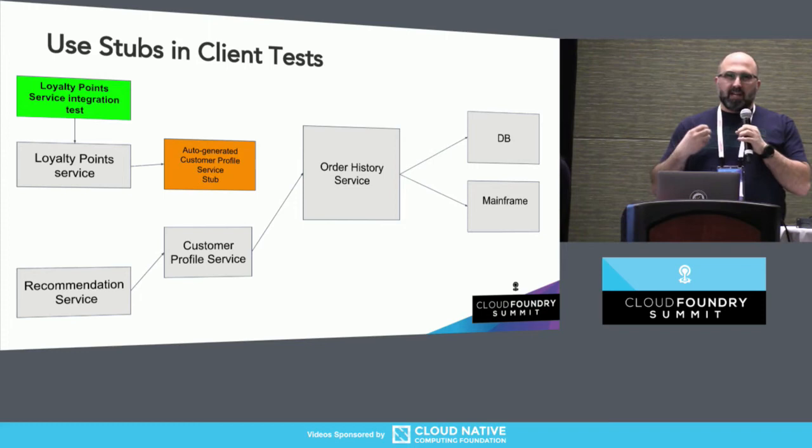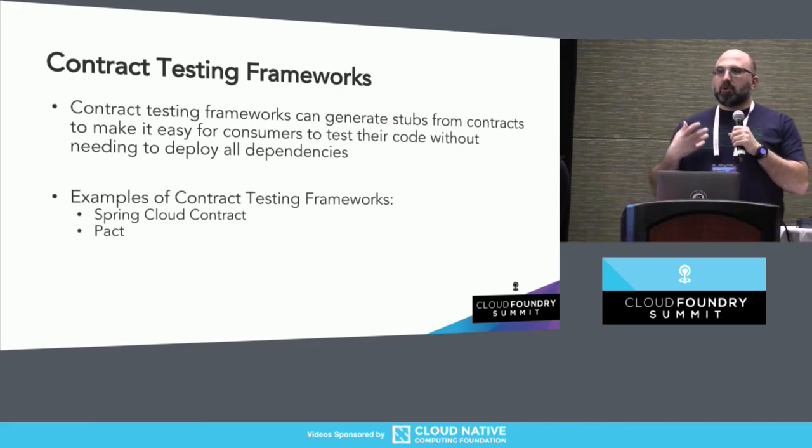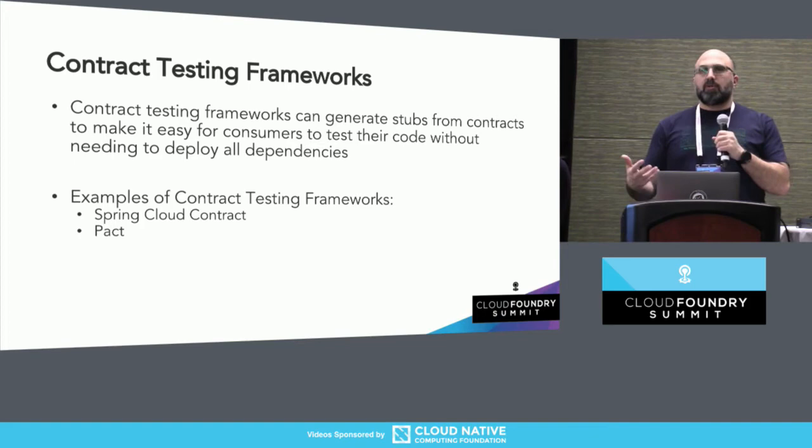We end up in a situation where if I want to write my loyalty point service integration test, I'm calling the auto-generated customer profile service stub. This resolves the problem of keeping it in sync because the contracts are used to generate the tests that the service provider uses to test their code, and the same contracts are used to generate the stubs. Since the contracts are part of the pipeline of the service provider, I resolve the problem of using a version of the stub that doesn't reflect reality. Your contract testing framework should be able to generate the stubs for you. We'll now turn it back to Reshmi to show you how this works in Spring Cloud Contract.